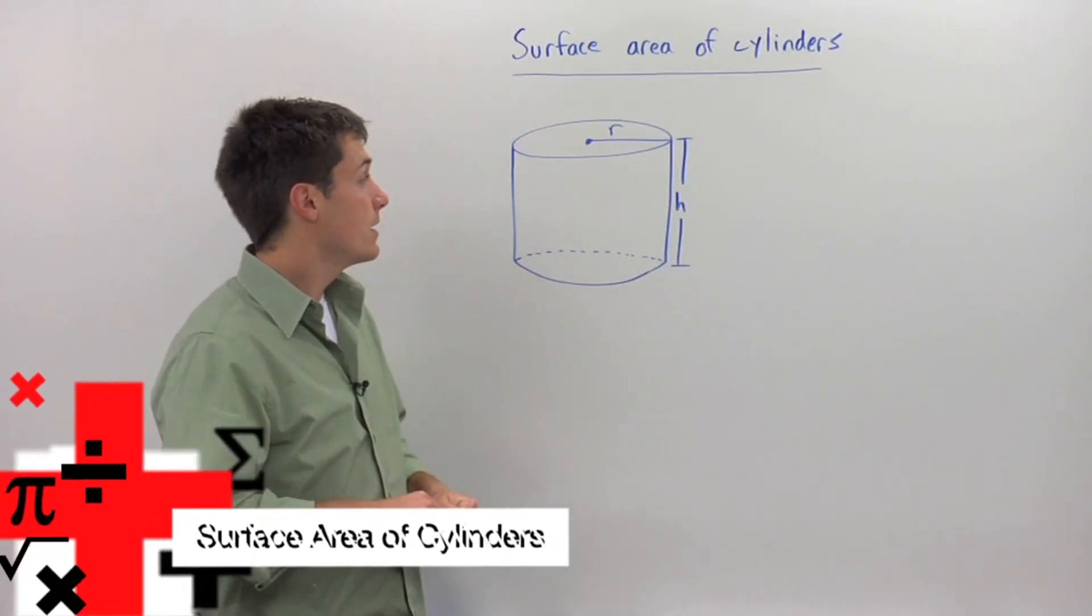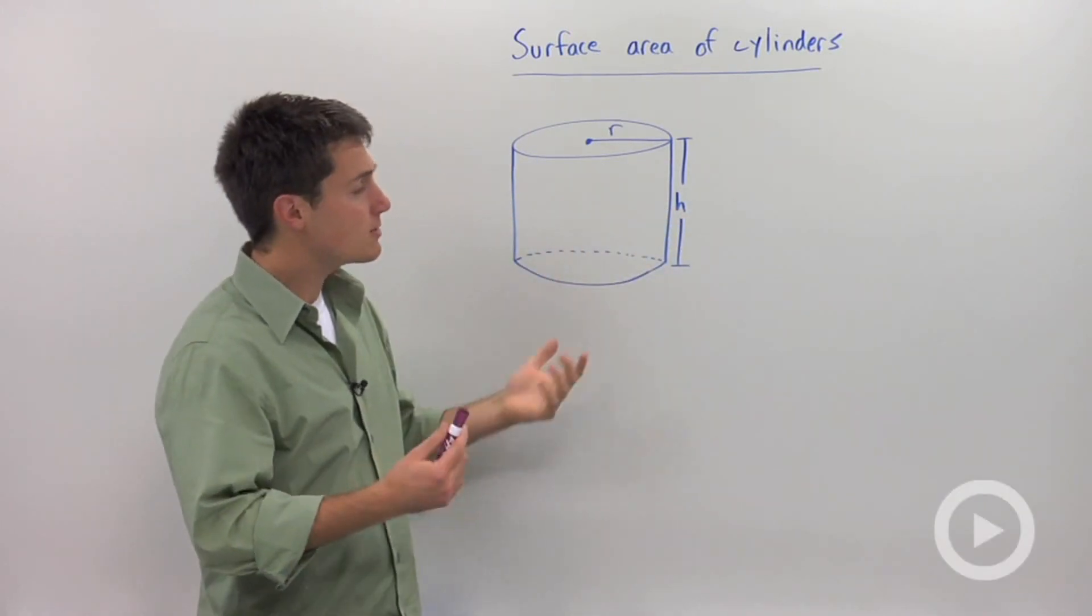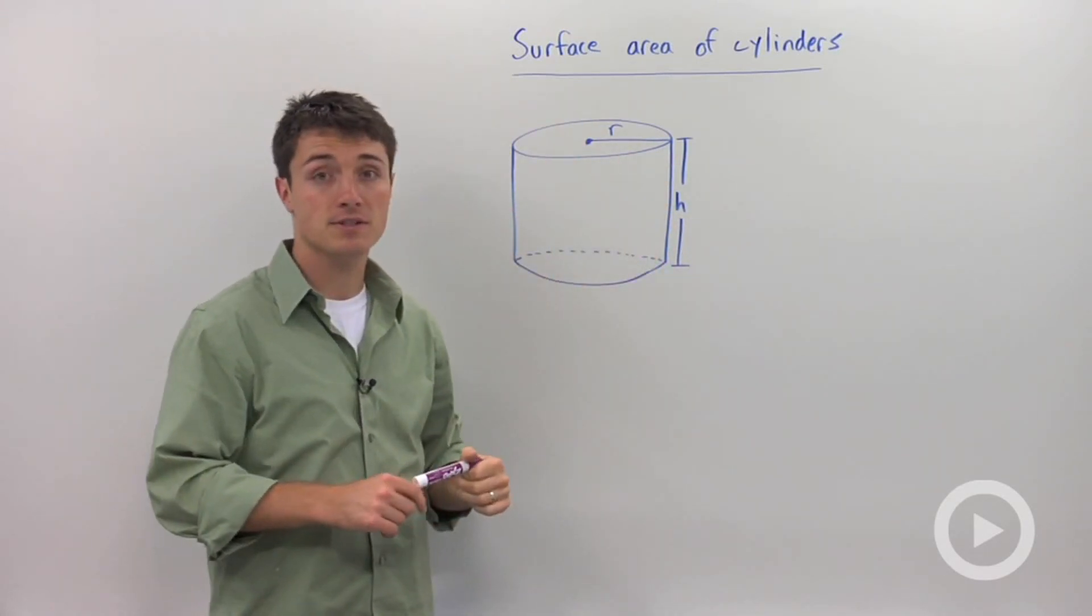Surface area is the amount of area on the outside of a polyhedron. So you can almost think of it as if you had a bucket of paint, how much paint would you need to cover the outside of the cylinder?